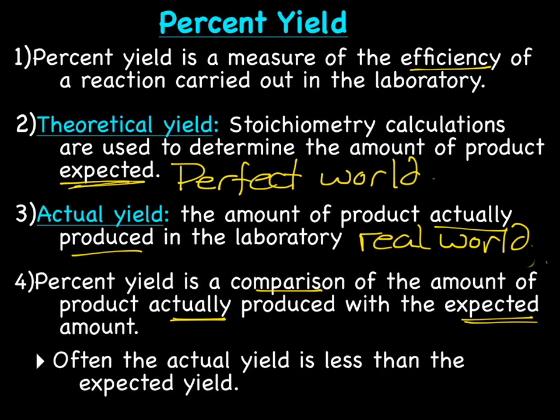And often, usually, the actual yield is less than the expected yield. Again, in the perfect world, you would make the most amount of product possible. In the real world, that doesn't happen. Something doesn't go exactly right.